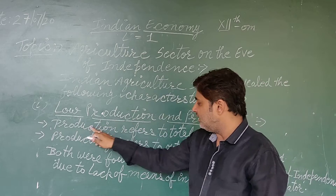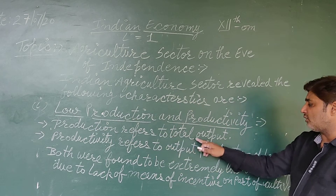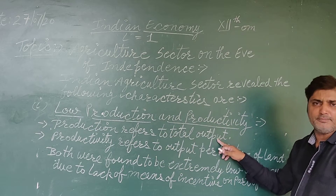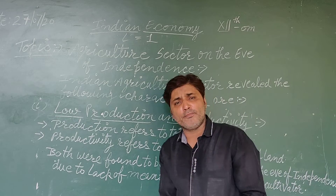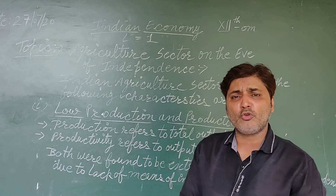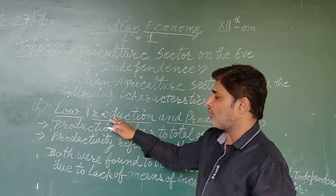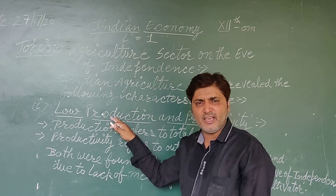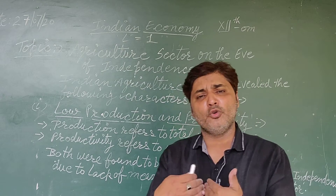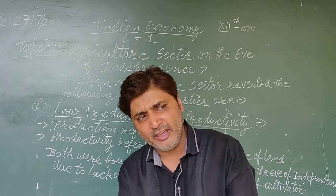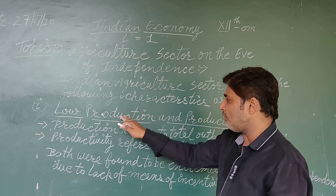Production means the total output. Whatever amount or quantity we produce on the land, we call it production. So the total quantity of goods produced from the land is referred to as production.